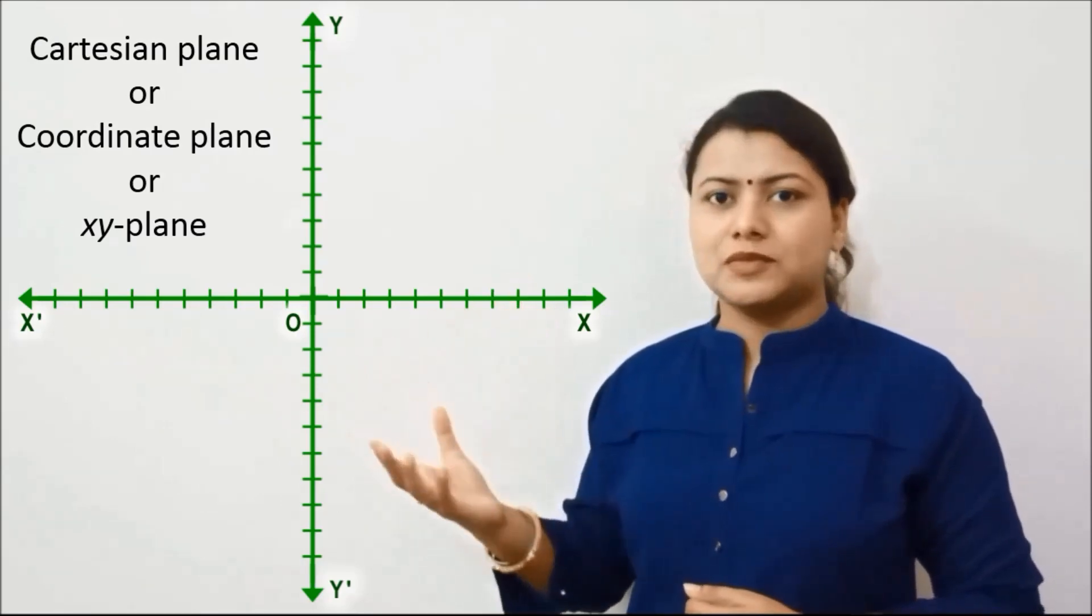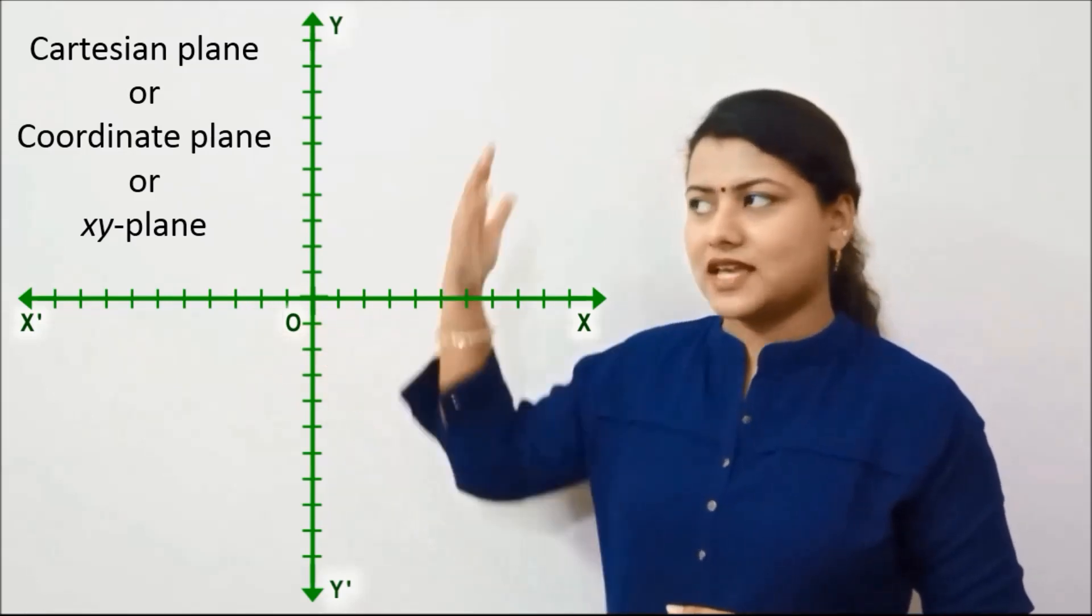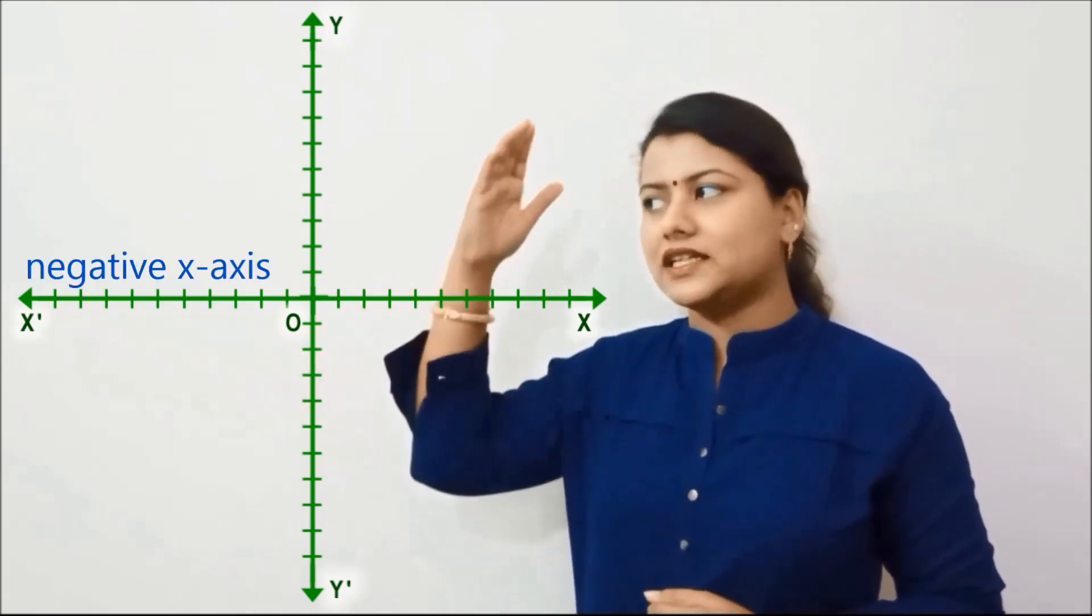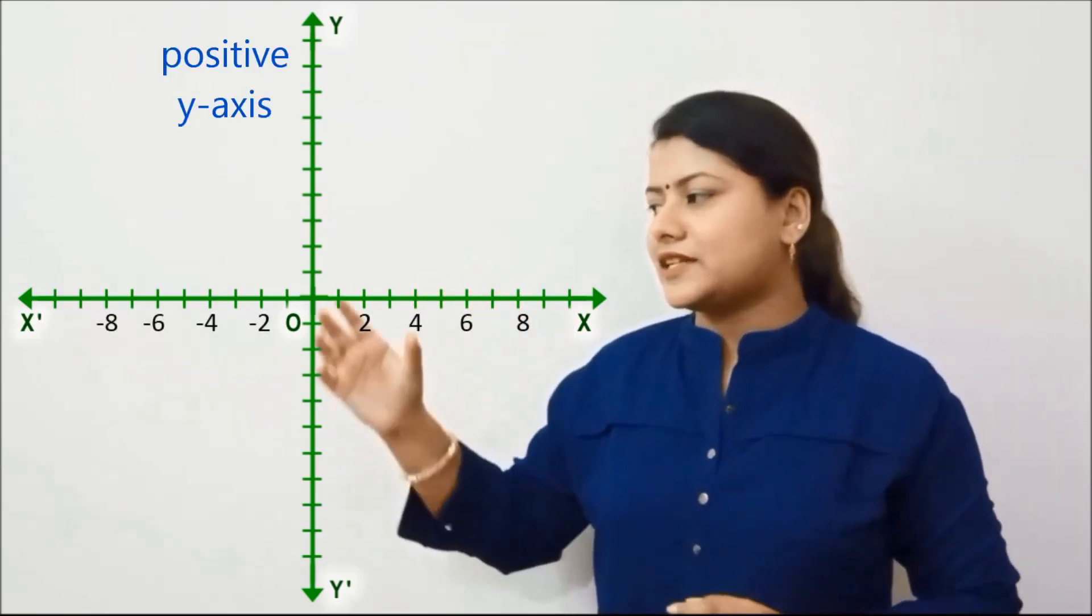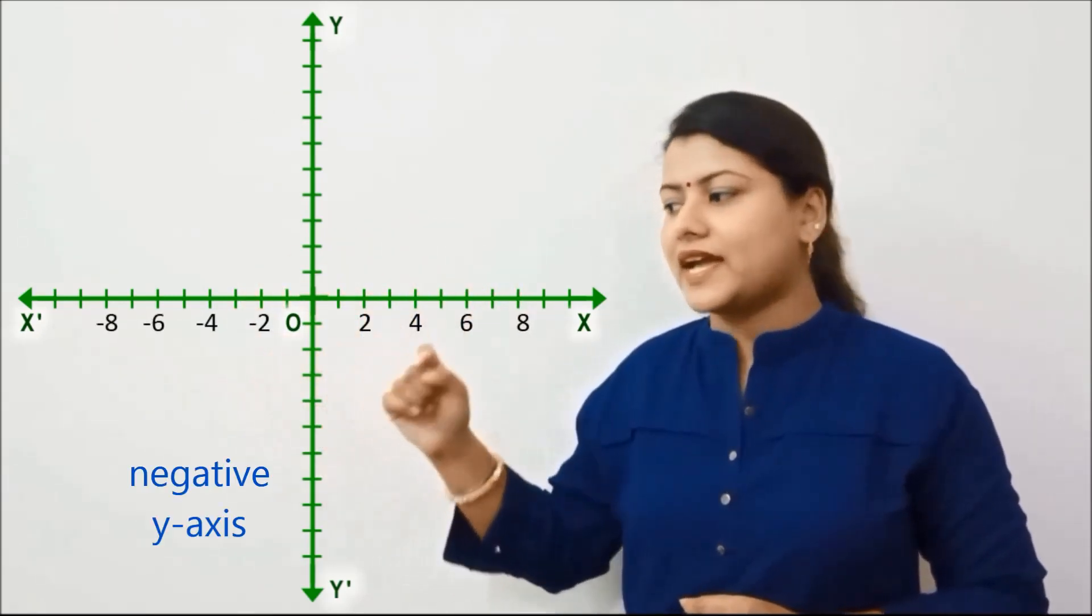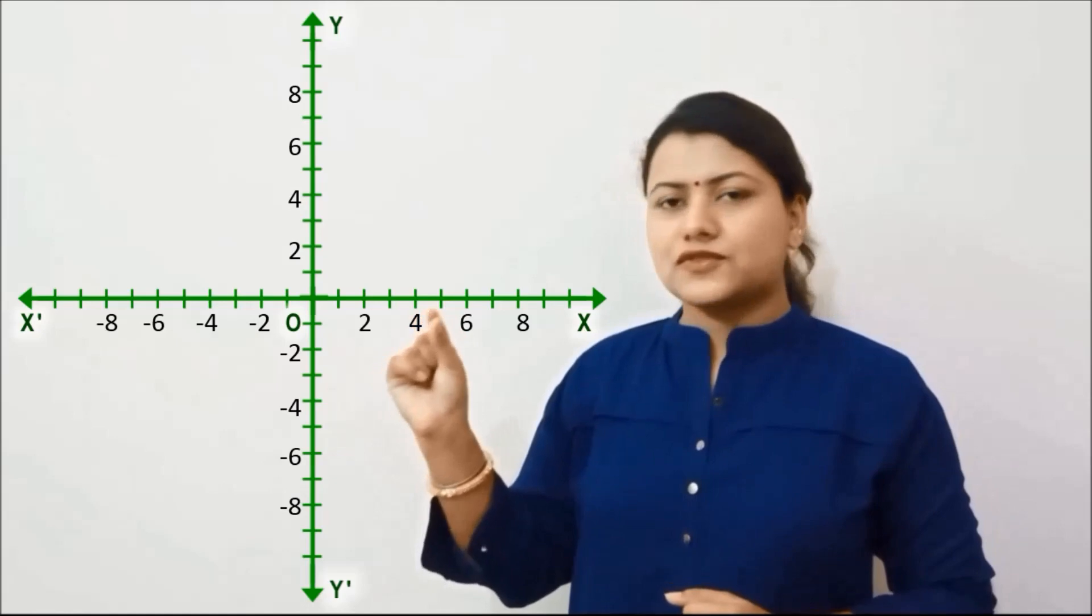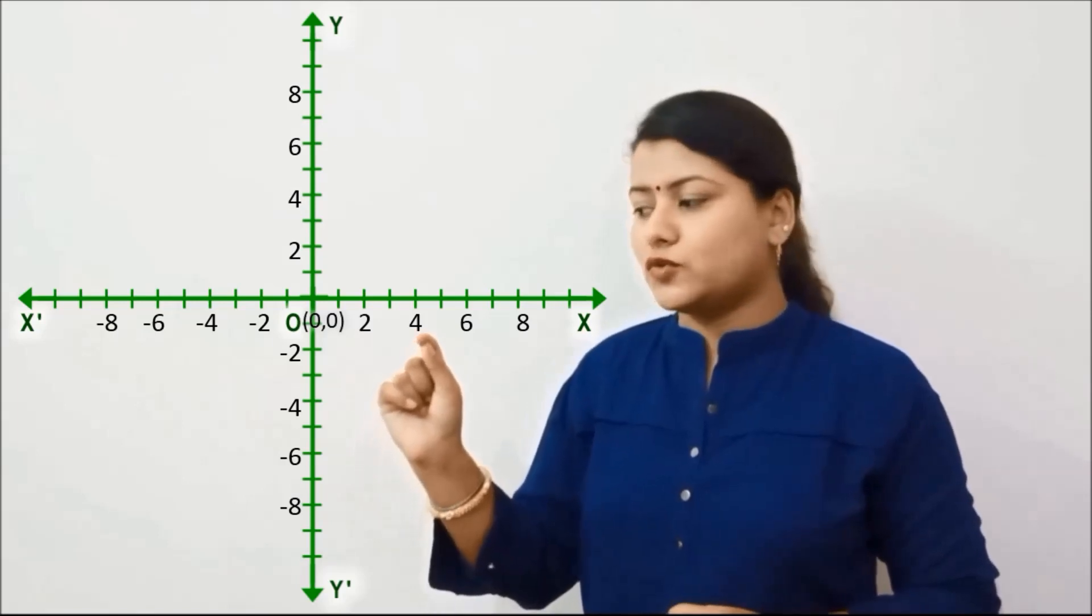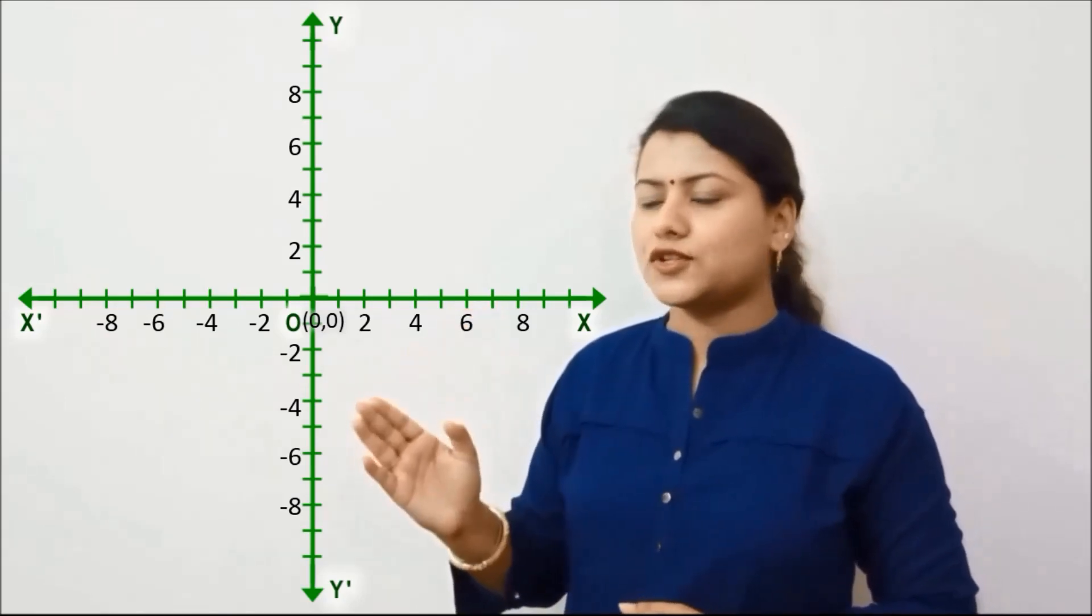Or we call it coordinate plane, or even we can call it XY plane, because it is having an x-axis and a y-axis. Yes, both the number lines. Here is the x-axis and the y-axis. If you will see, we have some positive values as well as some negative values of x-axis and some positive and negative values of y-axis, even with a zero. This zero is very important because we are going to measure all the distance from this point, so we will call it O for origin. Okay, and its coordinate will be zero, zero. This is the starting actually: zero, zero. From here all the points will be measured.